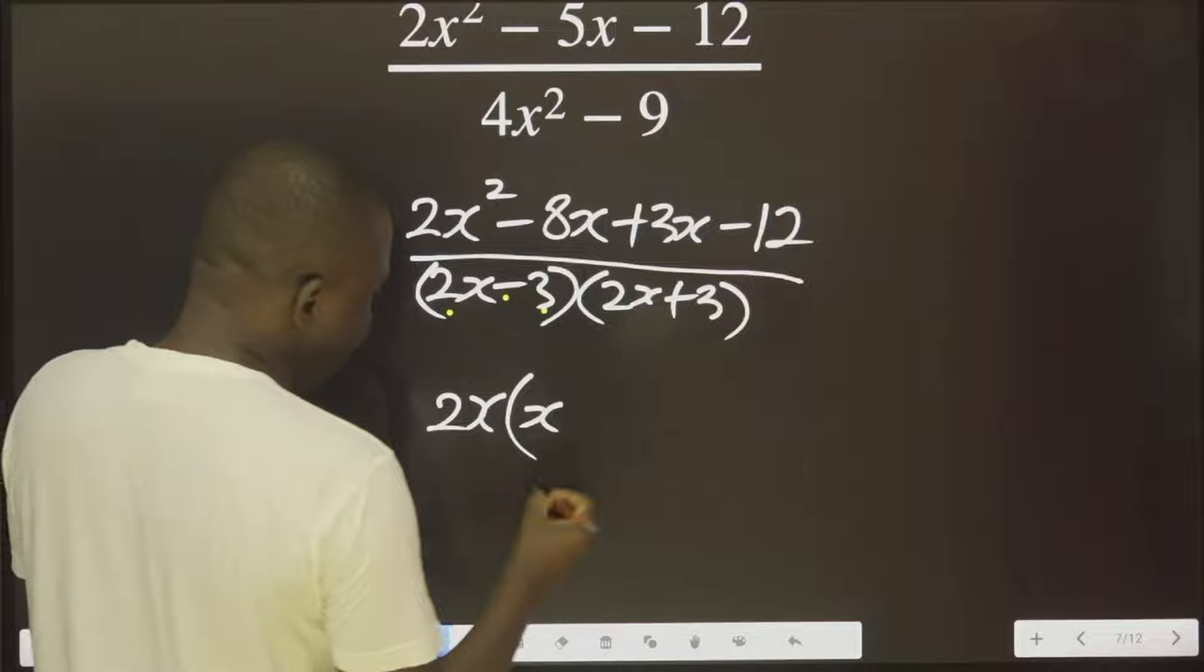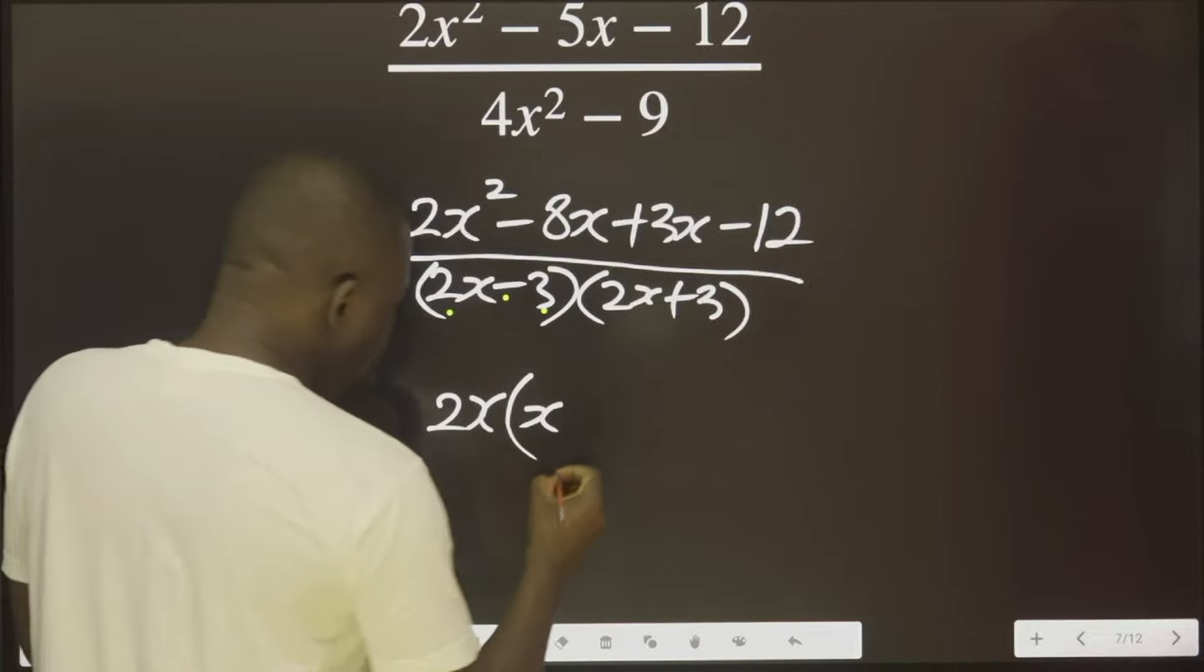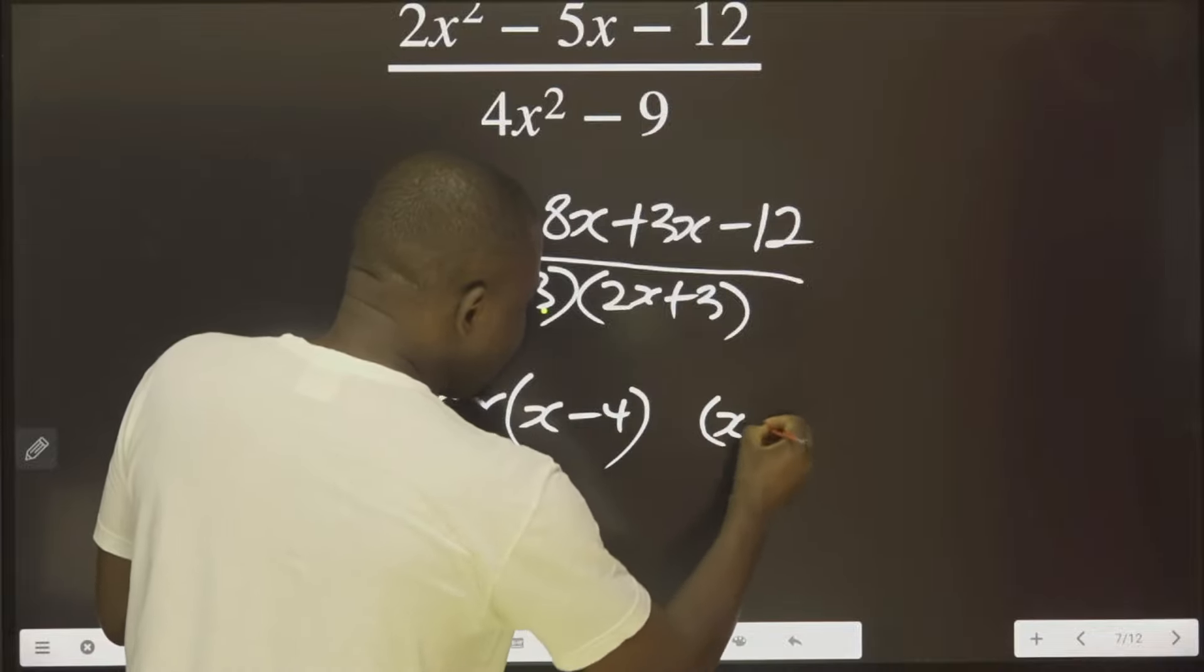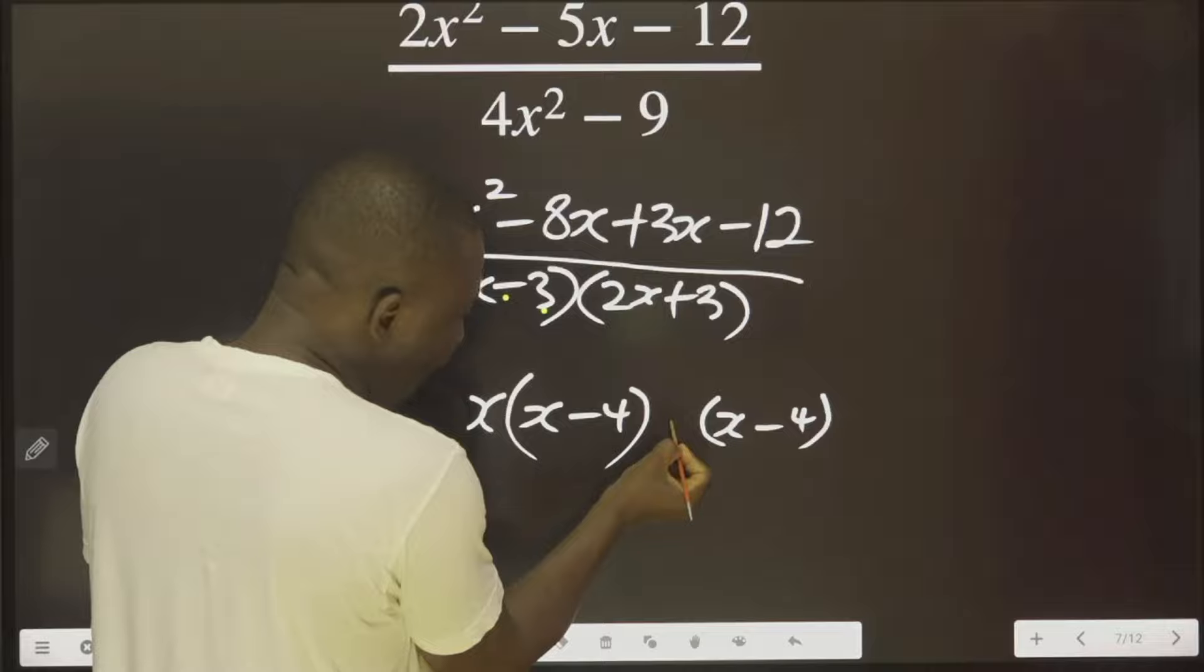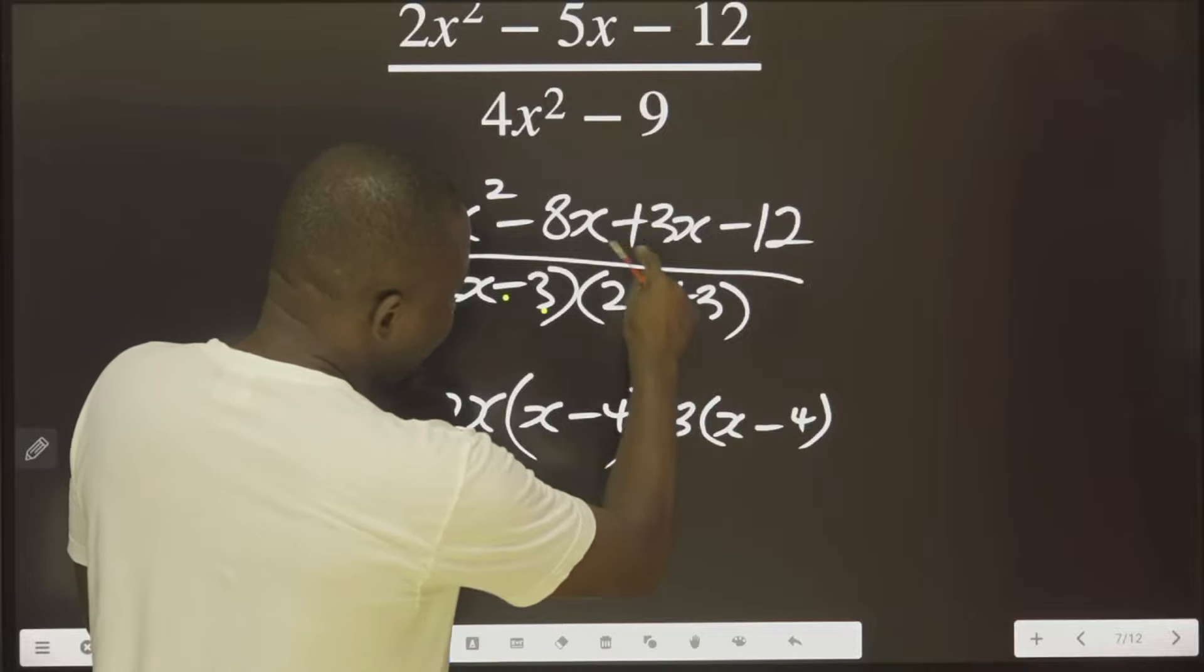What is remaining here when you remove this is x. What is remaining here is that is 8x divided by 2x, you're going to have 4. That is minus 4. You repeat this. x minus 4.